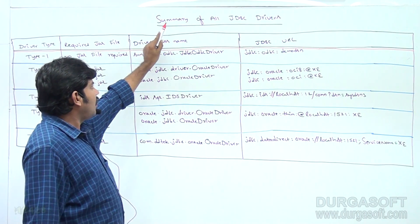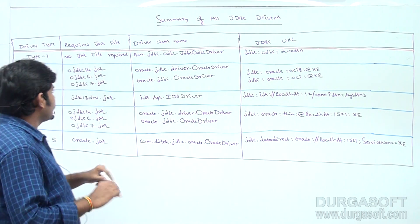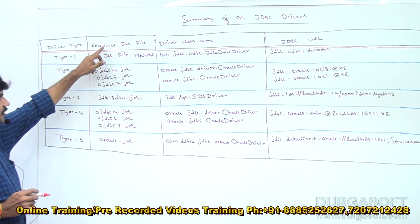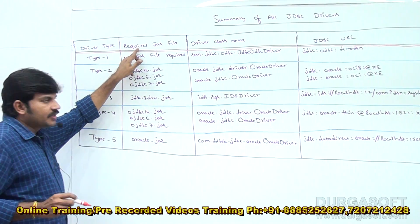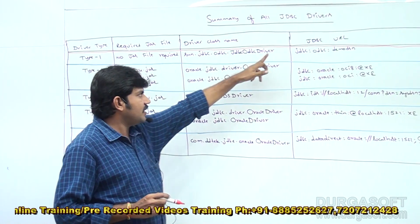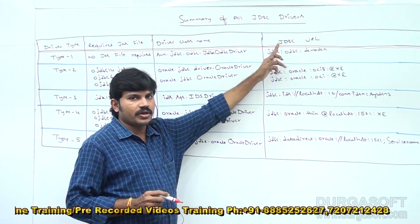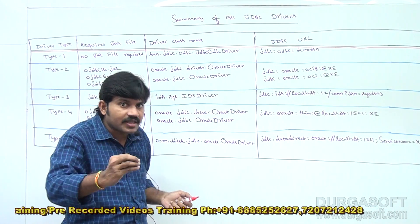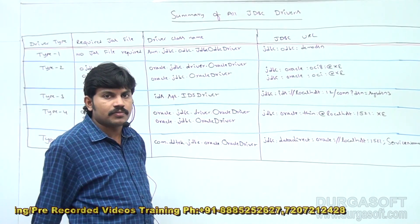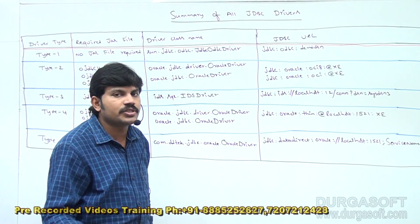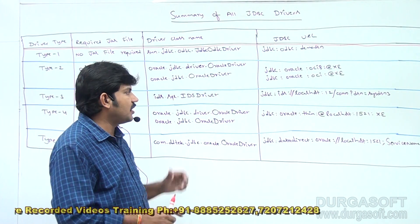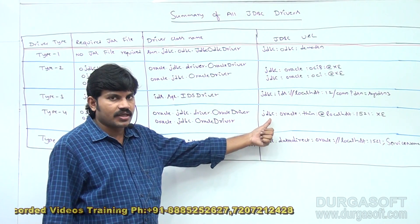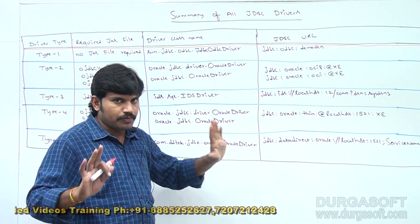Summary of all JDBC drivers: driver type, required jar file, driver class name, and JDBC URL. While developing the program, driver to driver, which things will be changed? Jar file, driver class name, and JDBC URL. That's why you should be clearly aware of these for each driver.